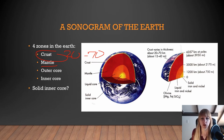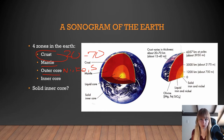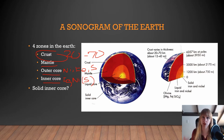The outer core is liquid and dense, made of nickel, iron, and sulfur. The inner core is solid iron and nickel. This tells us the Earth is density-differentiated, meaning the densest materials have sunk to the center and the lightest materials have risen to the top.